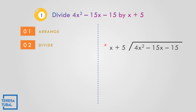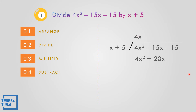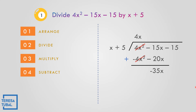Second step, divide: 4x squared divided by x gives 4x, reducing the exponent by one. After dividing, multiply: 4x times x is 4x squared, and 4x times 5 is 20x. Fourth step, subtract — change the sign and proceed to addition. So negative and negative: unlike signs subtract, same signs add. 4 minus 4 is 0, and negative 15 plus negative 20 is negative 35x. Bring down negative 15.